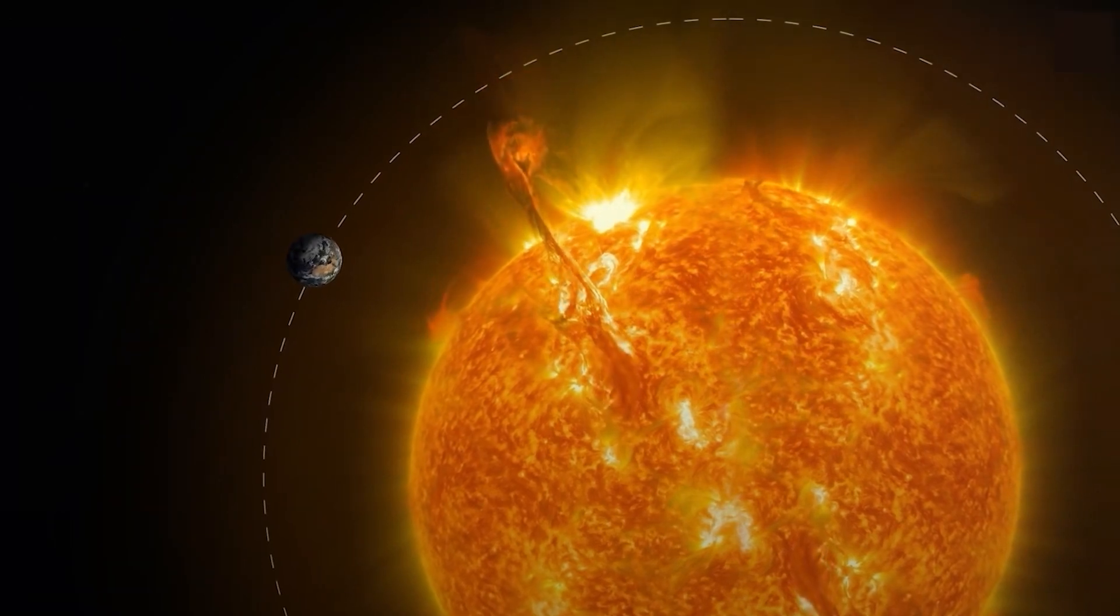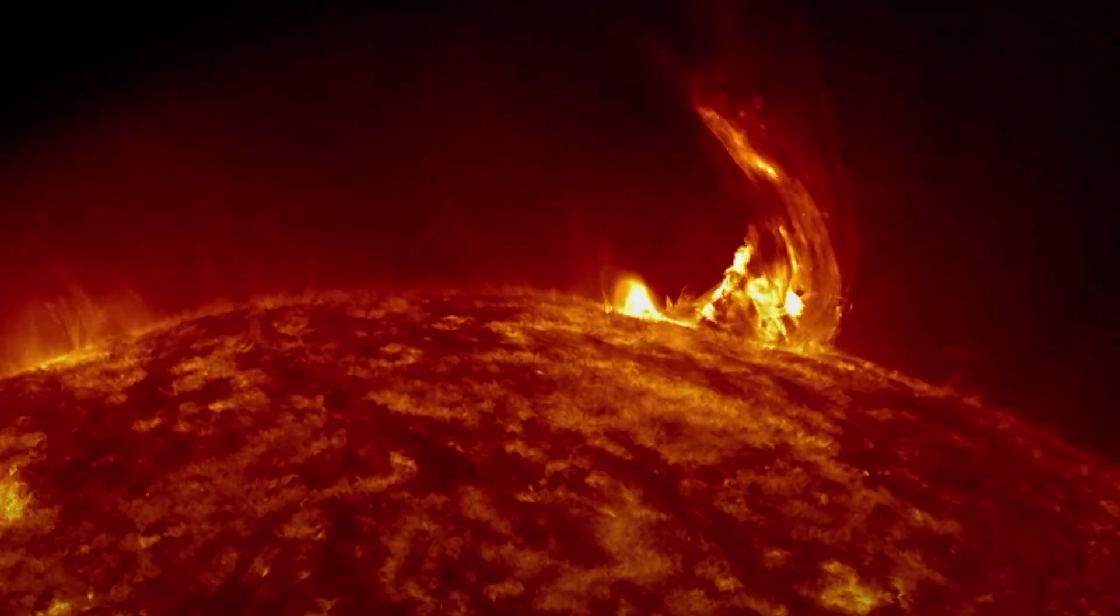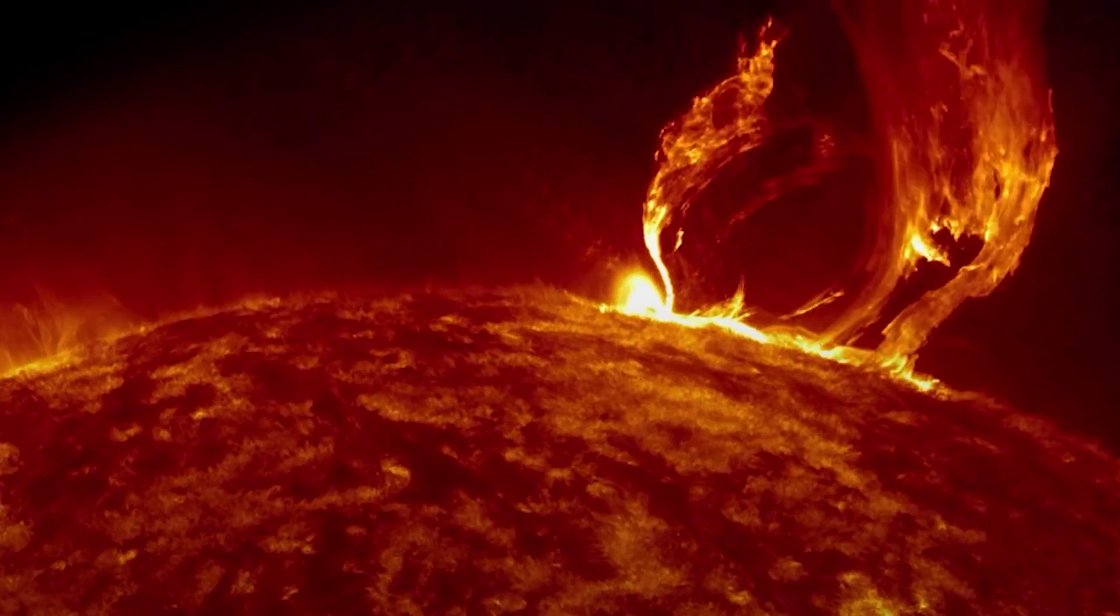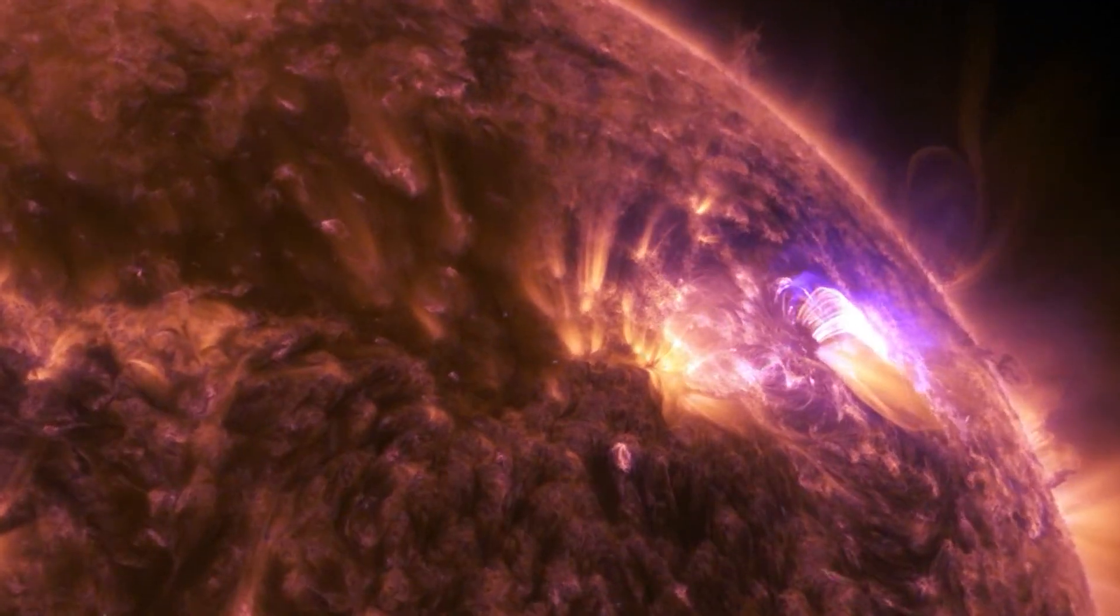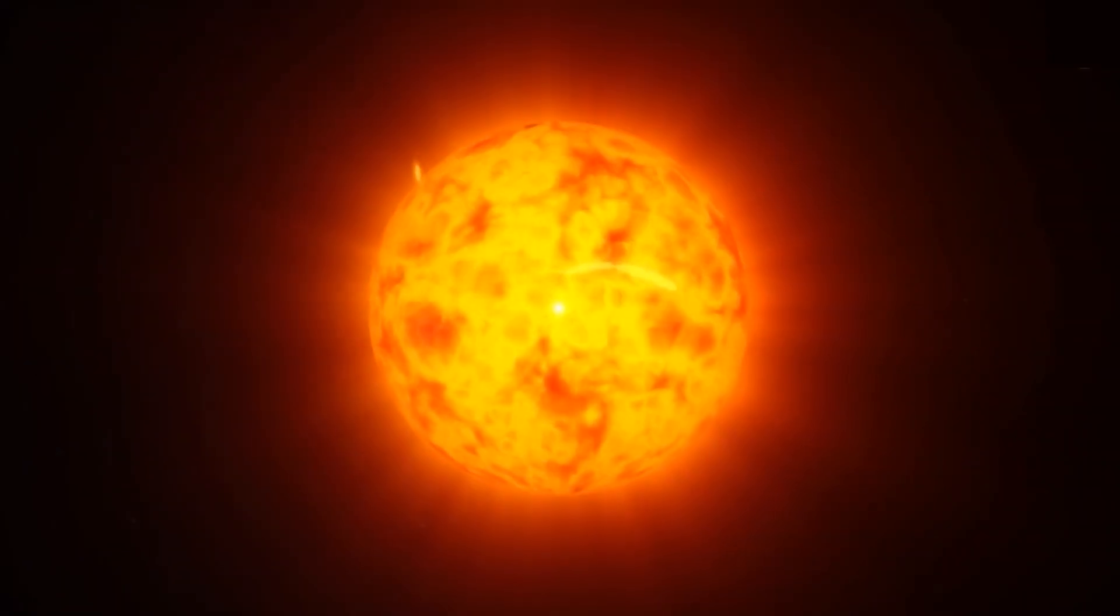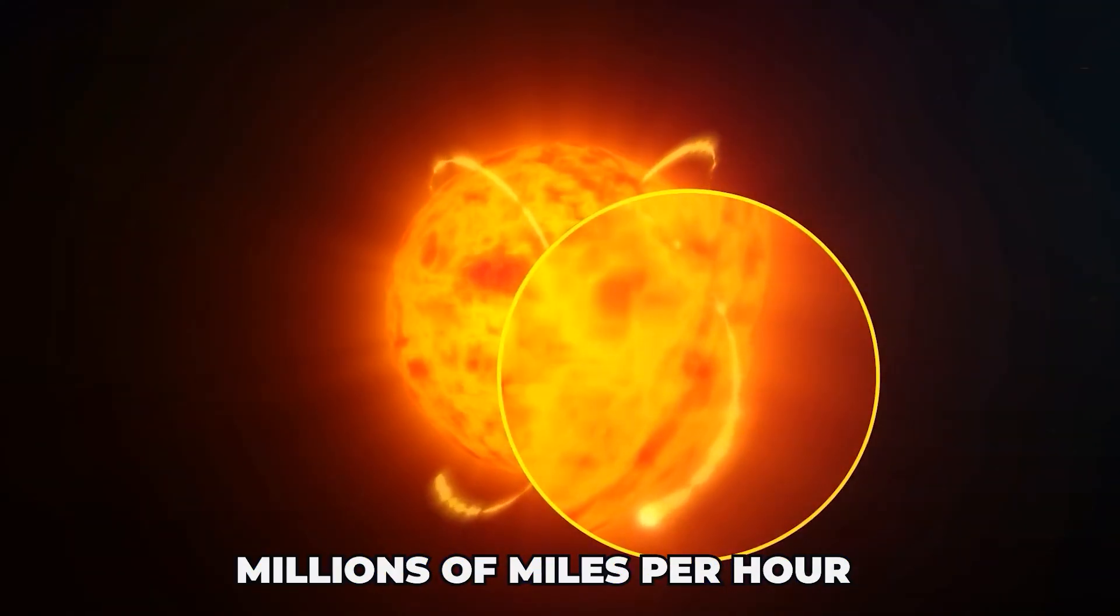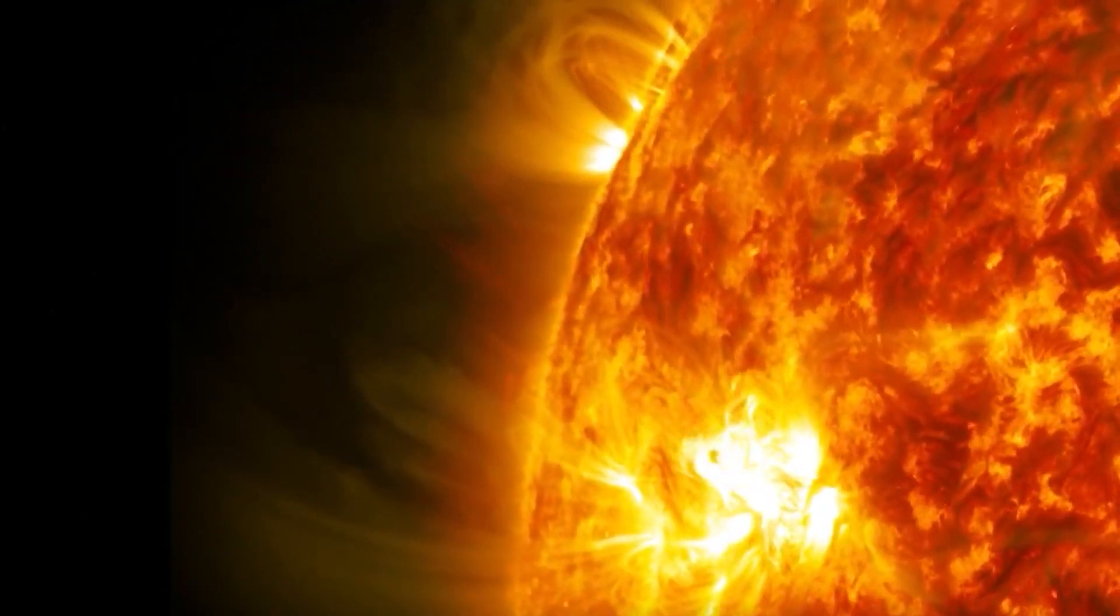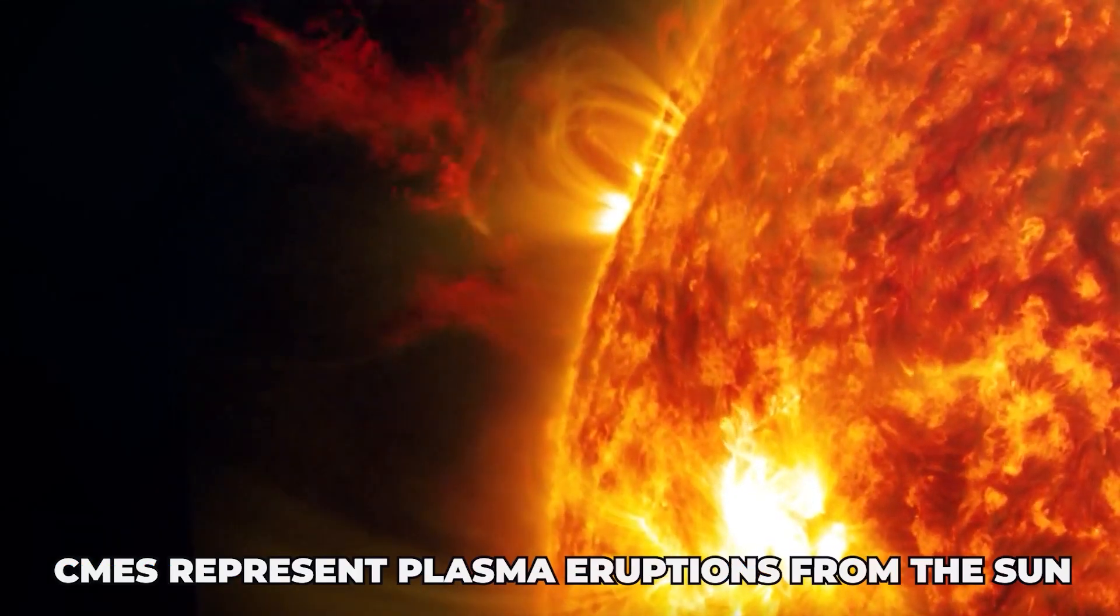Solar storms often coincide with the sun releasing large bubbles of solar material, known as coronal mass ejections, or CMEs. These CMEs can contain billions of tons of plasma, and they can move at incredibly high speeds, often reaching millions of miles per hour. While solar storms emit radiation, CMEs represent plasma eruptions from the sun.